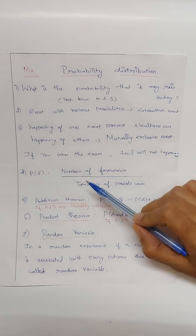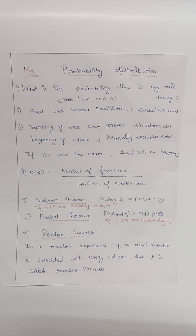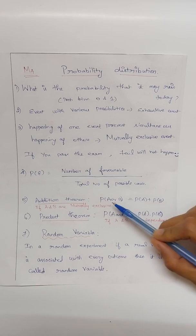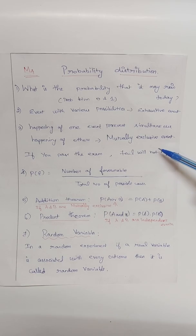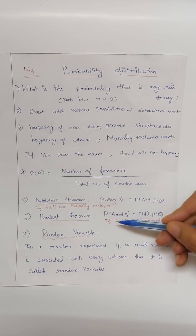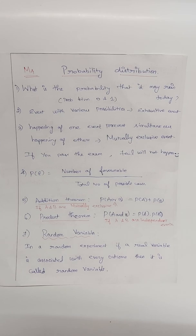The proper definition of probability is: probability equals the number of favourable outcomes divided by the total number of outcomes, and the value lies between zero and one. For the addition theorem, P(A or B) equals P(A) plus P(B), where A and B are mutually exclusive events. For the product theorem, P(A and B) equals P(A) times P(B), where A and B should be independent events.